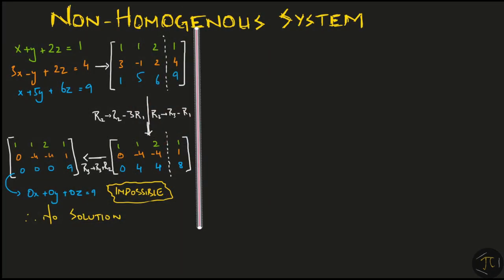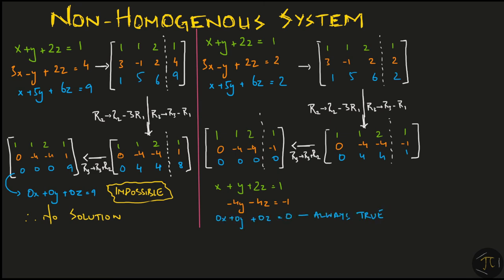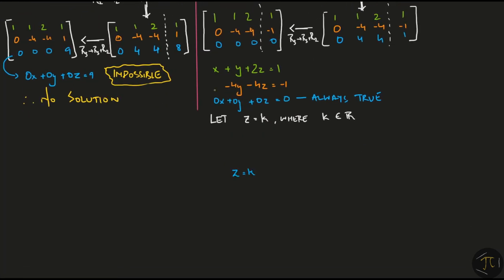Now, let me take the same set of equations again but change the right hand side with some other numbers. We form the augmented matrix and we perform the same row operations again. But this time, after we reach the echelon form and convert back to the algebraic form, we find that the last equation is always true. To obtain the general solution, let z equal to k where k is any real number and solving for the other two variables in terms of k, we get this solution.